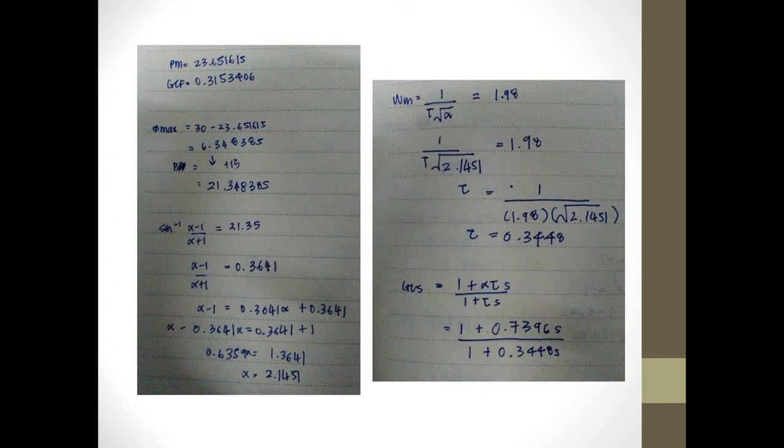To find the alpha value, we have to do sine alpha minus 1 over alpha plus 1. We will get 21.35 and the alpha is 2.1451. Next, we have to find the tau. 1 over tau square root alpha equals 1.98. So, the tau is 0.3448.